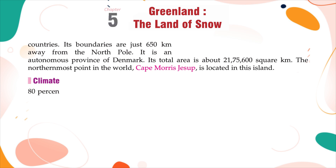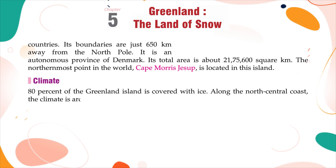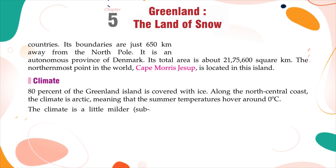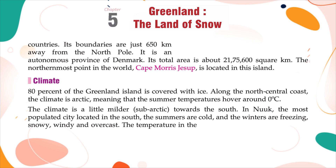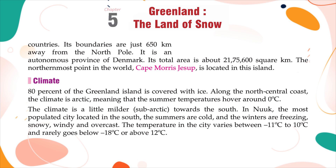Climate: 80% of the Greenland island is covered with ice. Along the north-central coast, the climate is Arctic, meaning that the summer temperatures hover around 0 degrees Celsius. The climate is a little milder — sub-Arctic — towards the south. In Nuuk, the most populated city located in the south, the summers are cold and the winters are freezing, snowy, windy, and overcast. The temperature in the city varies between minus 11 degrees Celsius to 10 degrees Celsius, and rarely goes below minus 18 degrees Celsius or above 12 degrees Celsius.